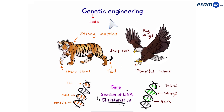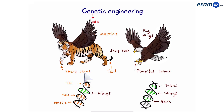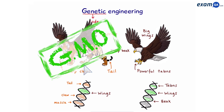In genetic engineering, we're going to be taking genes from one organism and transferring it to another one, to create some interesting combinations. When we do this, we have produced a GMO, also known as a genetically modified organism.